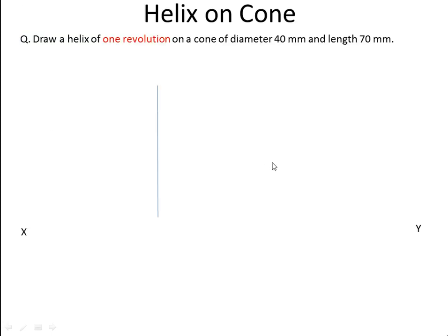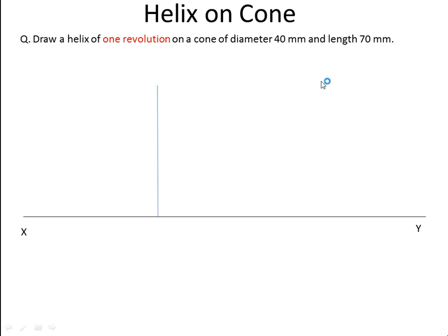The next problem is to draw a Helix on a Cone for one revolution. The diameter of the cone is 40 mm and its length (height) is 70 mm. For this we have to draw the front view and top view of the cone. In top view the cone looks like a circle; in front view it looks like a triangle. I have drawn the top view.